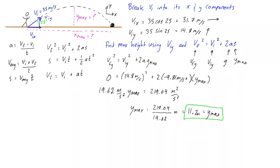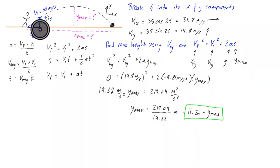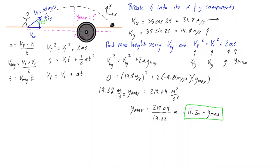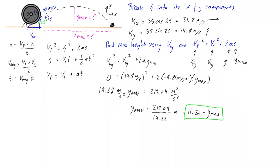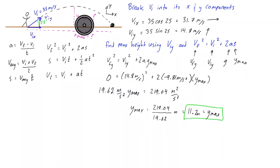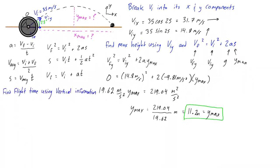Now we're ready to find x_max, the horizontal distance the ball travels while airborne. Before we can find x_max, we need the total flight time. It's the same time it would take an object launched straight up at 14.8 meters per second to go up, stop, come back down, and strike the ground — and that's how long the ball travels horizontally at a constant speed of 31.7 meters per second.